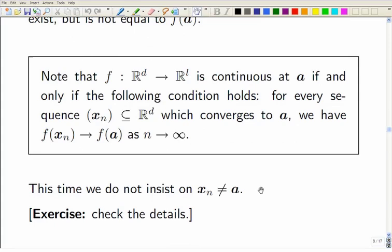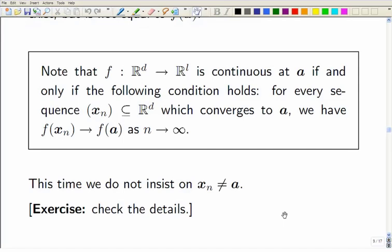And you should check the details, why you don't have to insist that X_n is not equal to A. Because you could insist that X_n is not equal to A, and it would still give you a perfectly good definition of continuity. But allowing some of the X_ns to be A doesn't make any difference, and that's something for you to think about. OK, so that's continuity and function limits in terms of sequences.